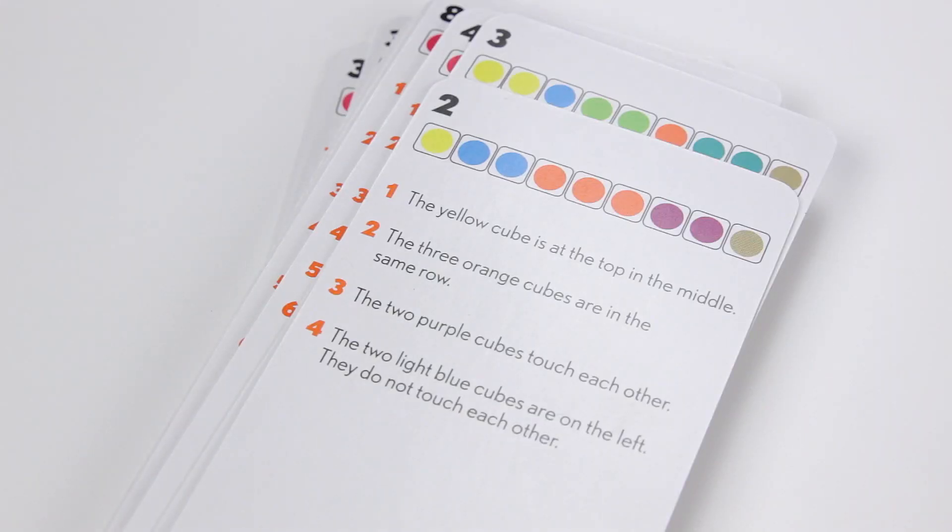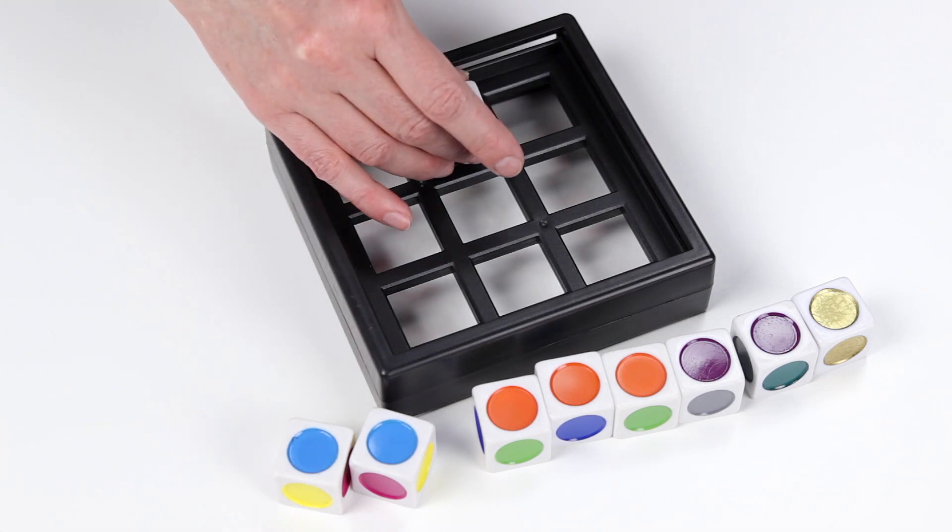For puzzle number two, the first clue is the yellow cube is at the top in the middle. That's an easy one that goes right here.